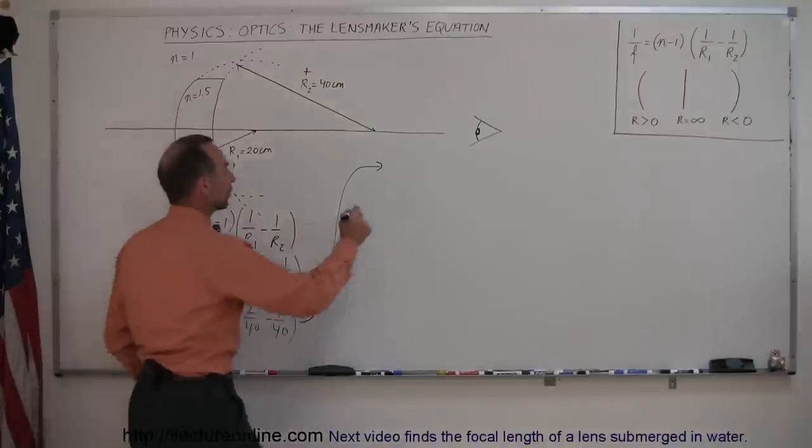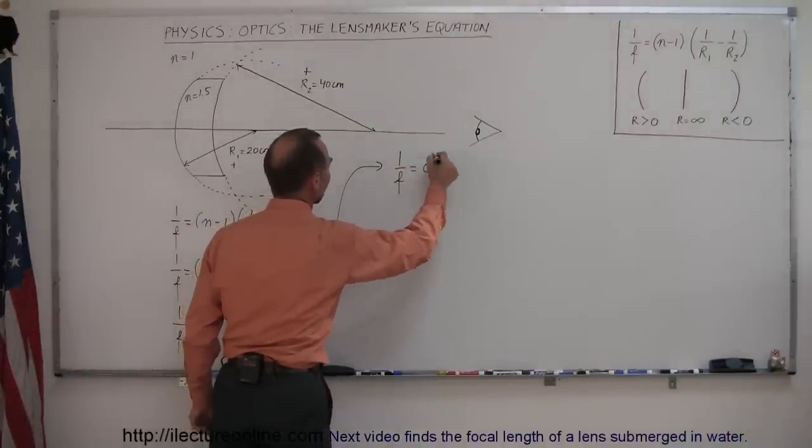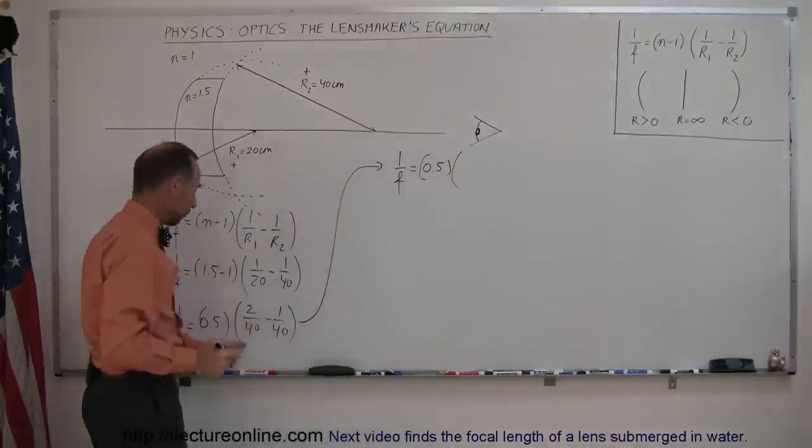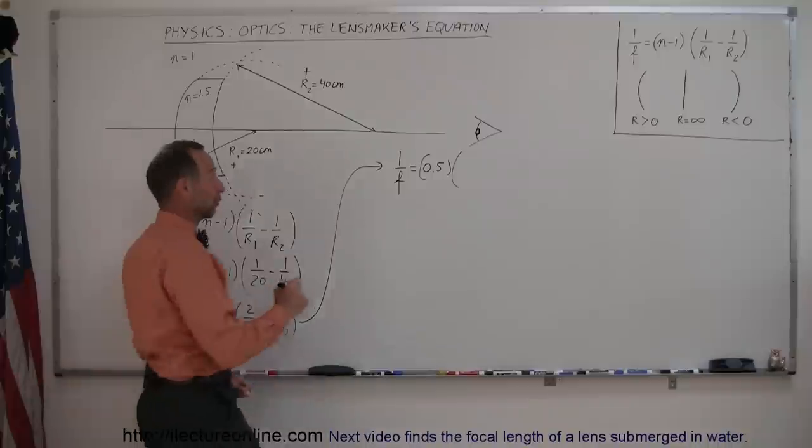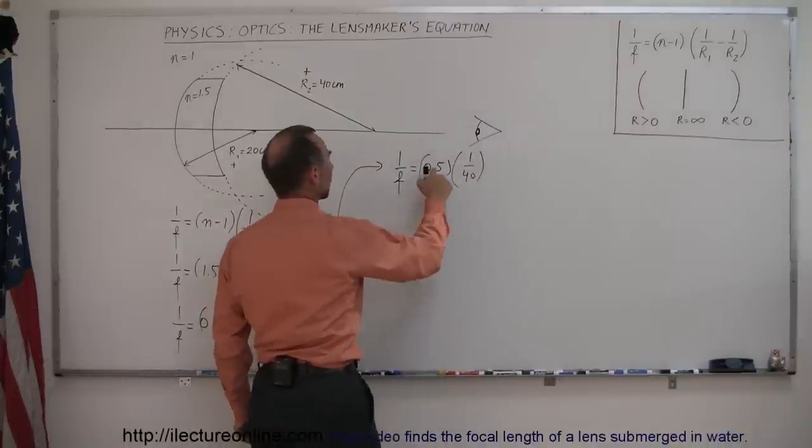so we have the focal length equals 0.5, or 1 over the focal length equals 0.5 times, and of course 2 over 40 minus 1 over 40 is 1 over 40, so now we can multiply that together.